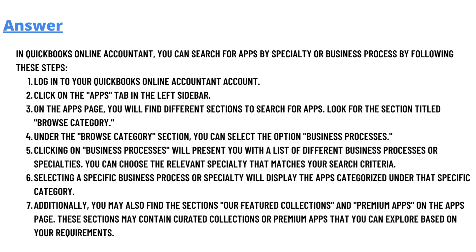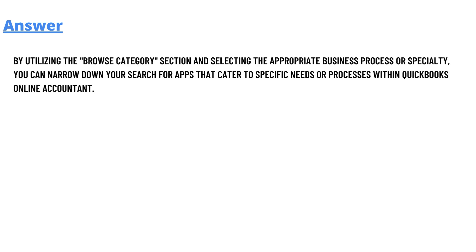Option six: selecting a specific business process or specialty will display the apps categorized under that specific category. Option seven: additionally, you may also find sections for Featured Collection and Premium Apps on the app page. These sections may contain curated collections of apps that you can explore based on your requirements.